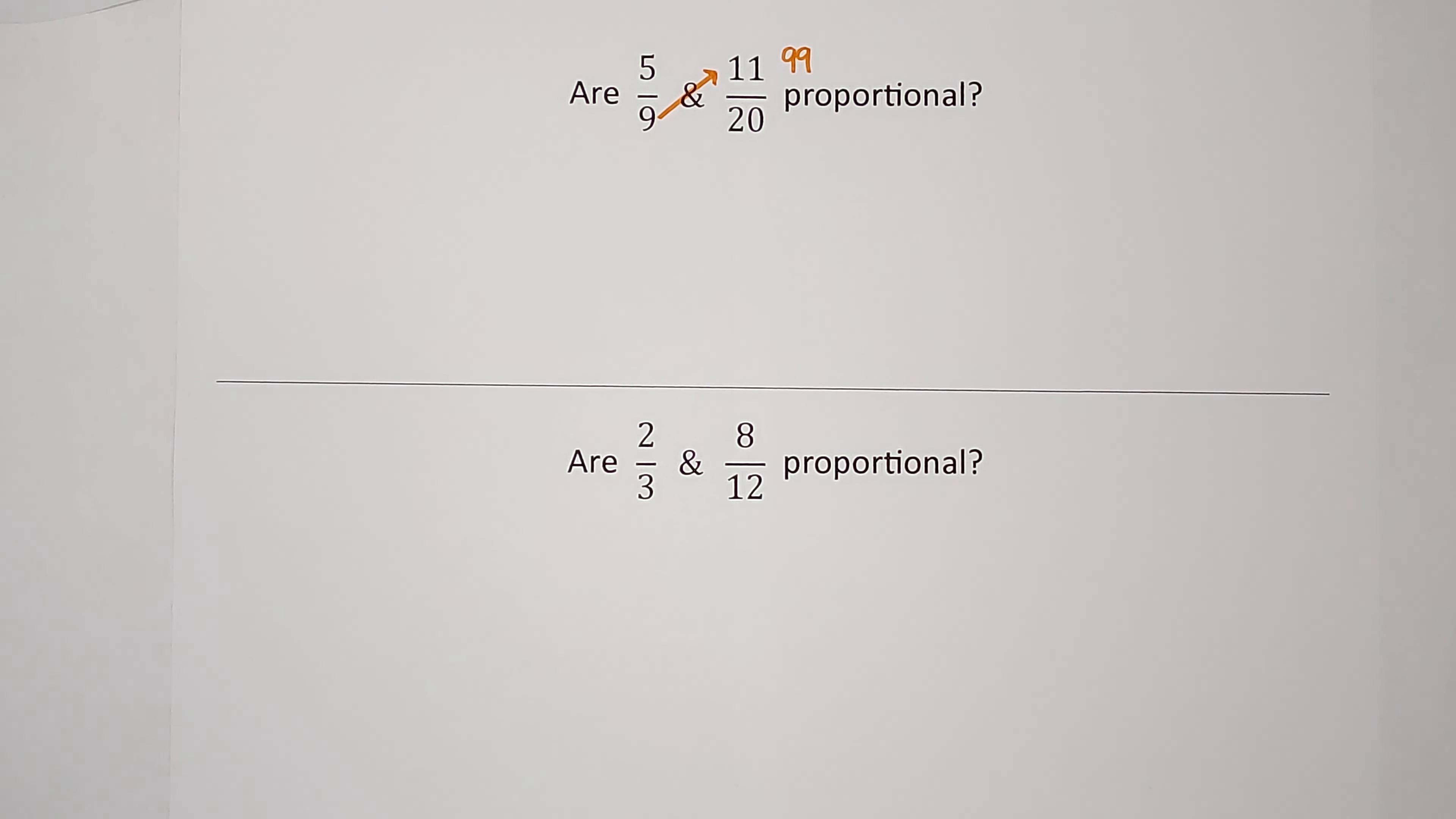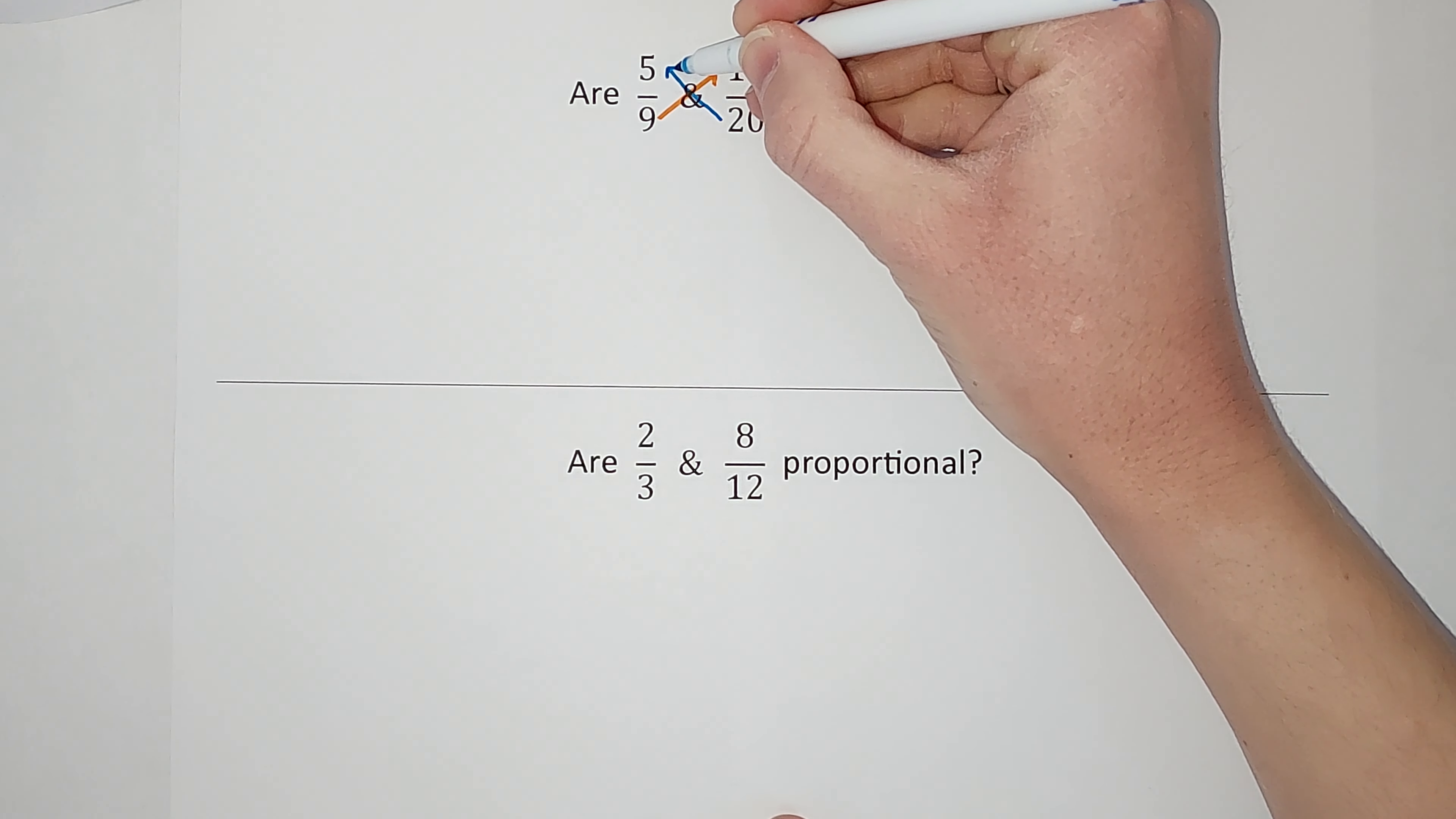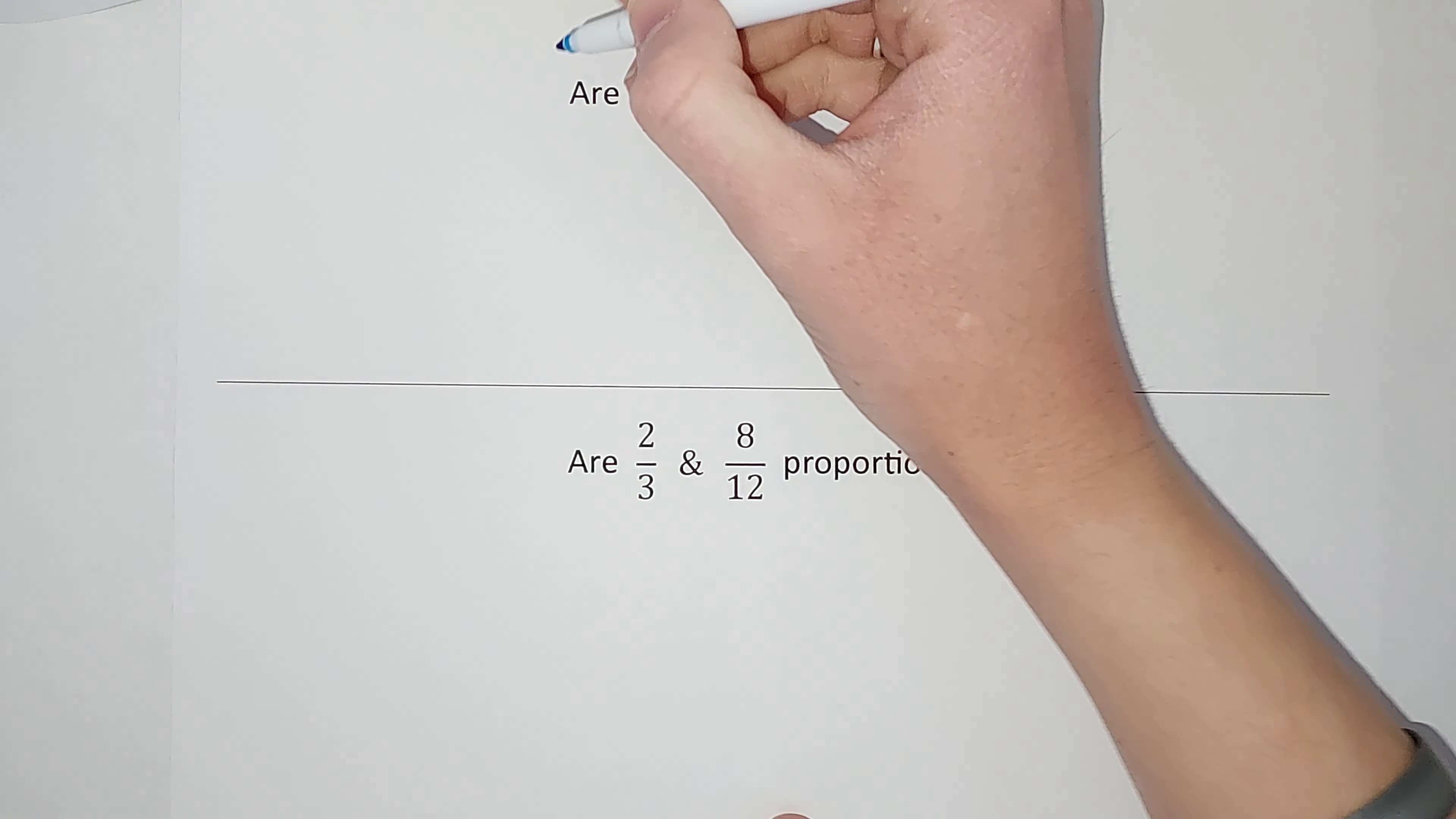Okay, then we're going to do the same thing with the other ones. So we're going to go 20 times 5, which gives me 100.